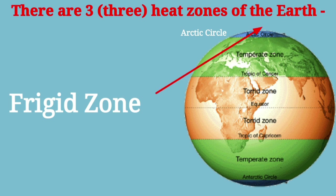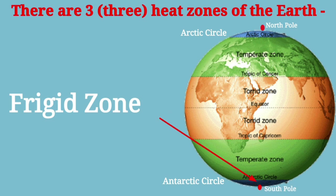Frigid Zone is the area between the Arctic Circle and the North Pole or the Antarctic Circle and the South Pole.